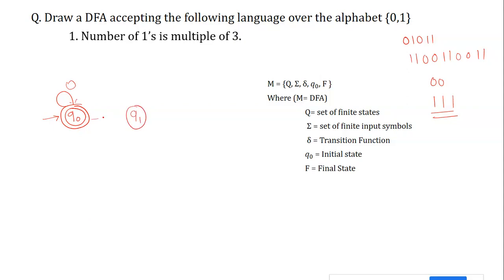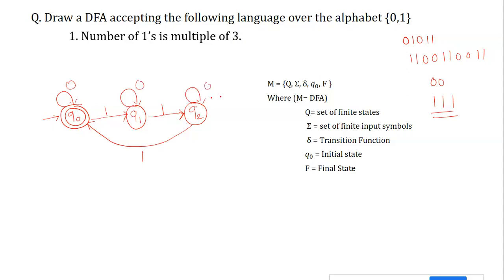To build the DFA: from q0, reading the first one moves us to q1. From q1, reading the next one moves us to q2. Reading the third one from q2 brings us back to q0, the final state — completing one cycle of three ones. For six ones, we repeat the cycle: 1,1,1 then 1,1,1 again. Zeros are accepted as self-loops at each state.